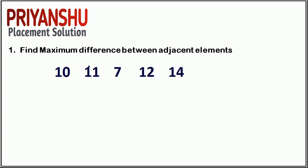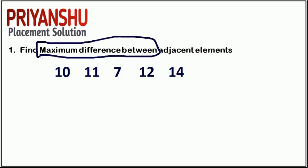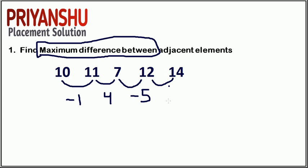The first question is: find the maximum difference between adjacent elements. This question is very confusing and many students comment saying the code is wrong, but my code is 100% correct. So, looking at the array: 10, 11, 7, 12, 14 — the differences are: 11 minus 10 = 1, 11 minus 7 = 4, 7 minus 12 = -5, and 12 minus 14 = -2. The maximum difference is 4.